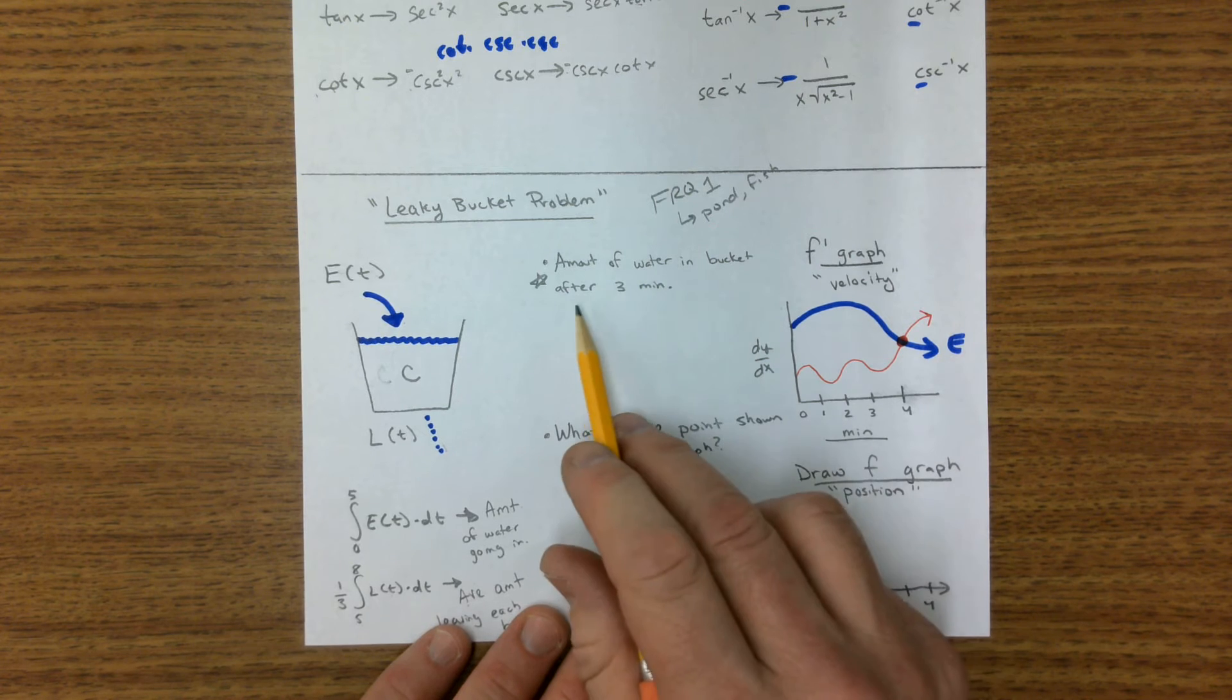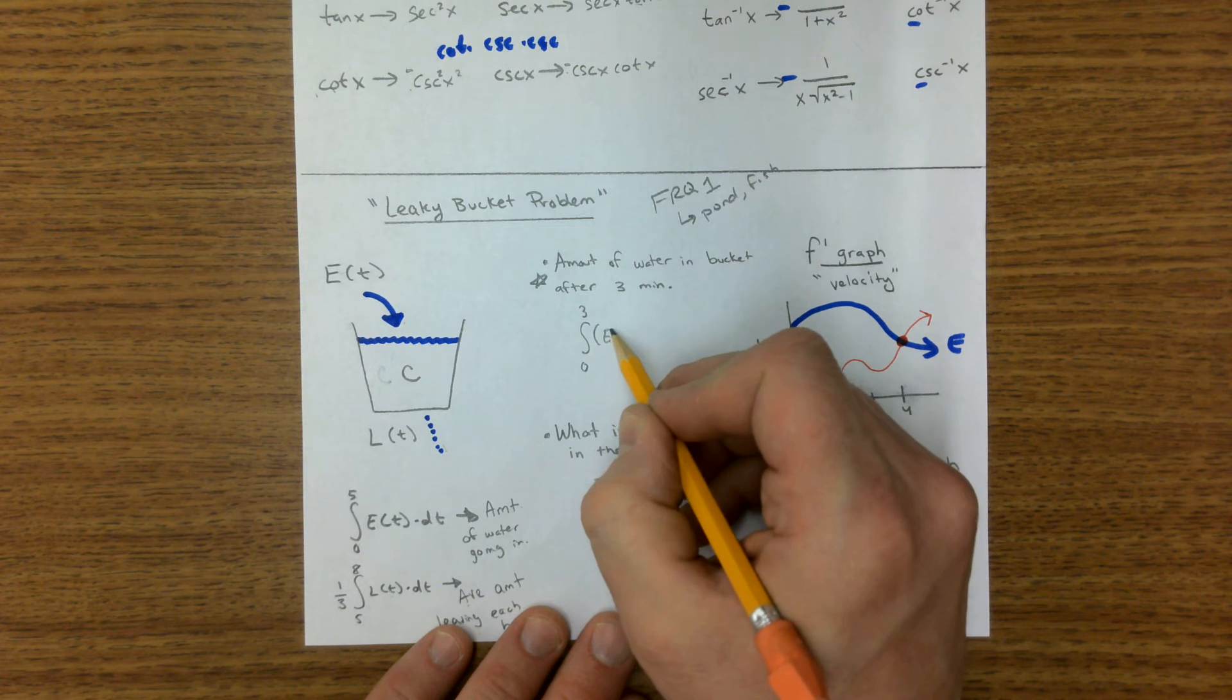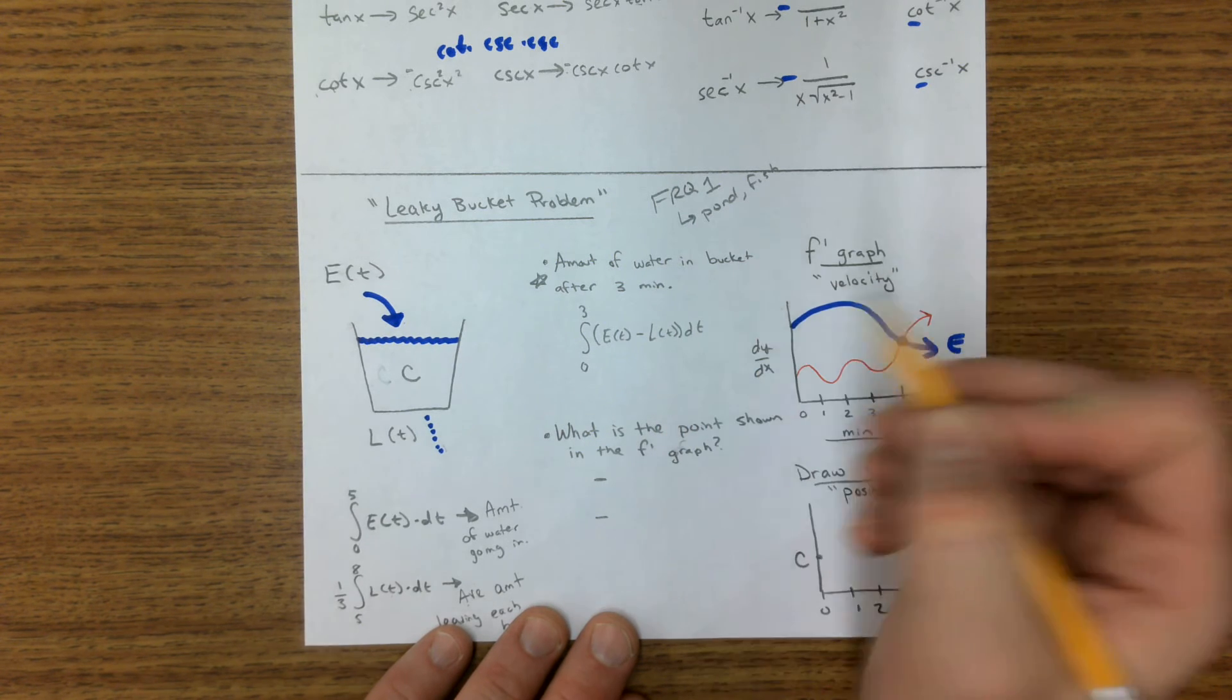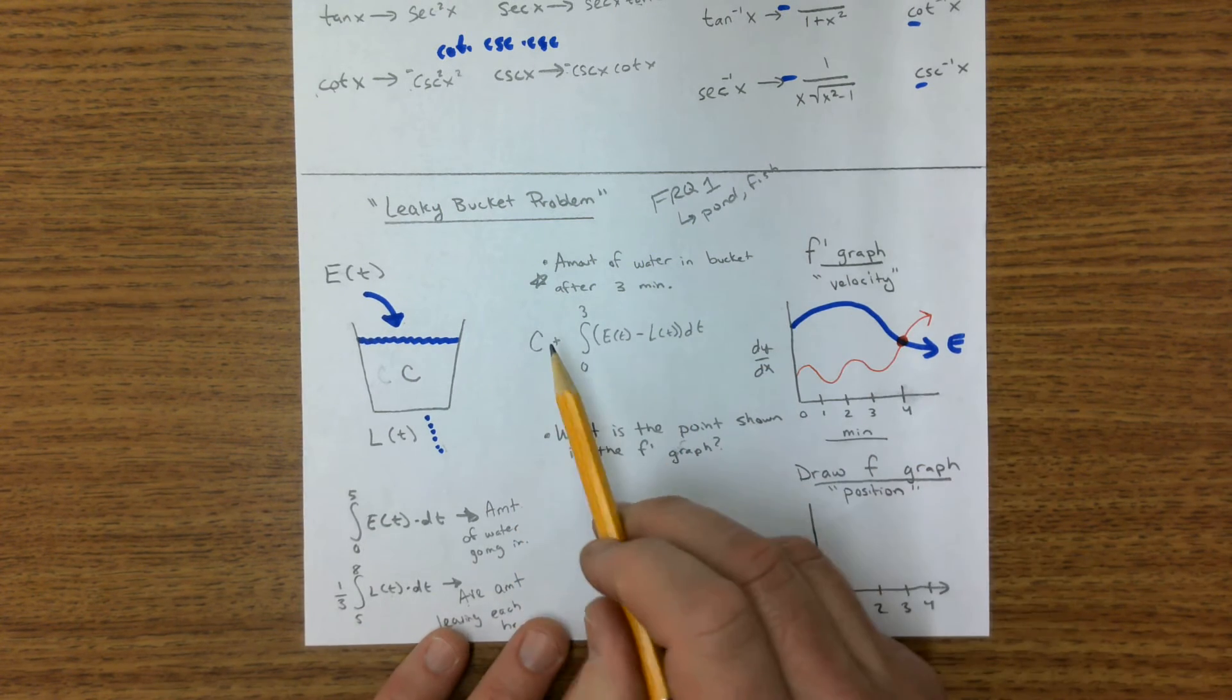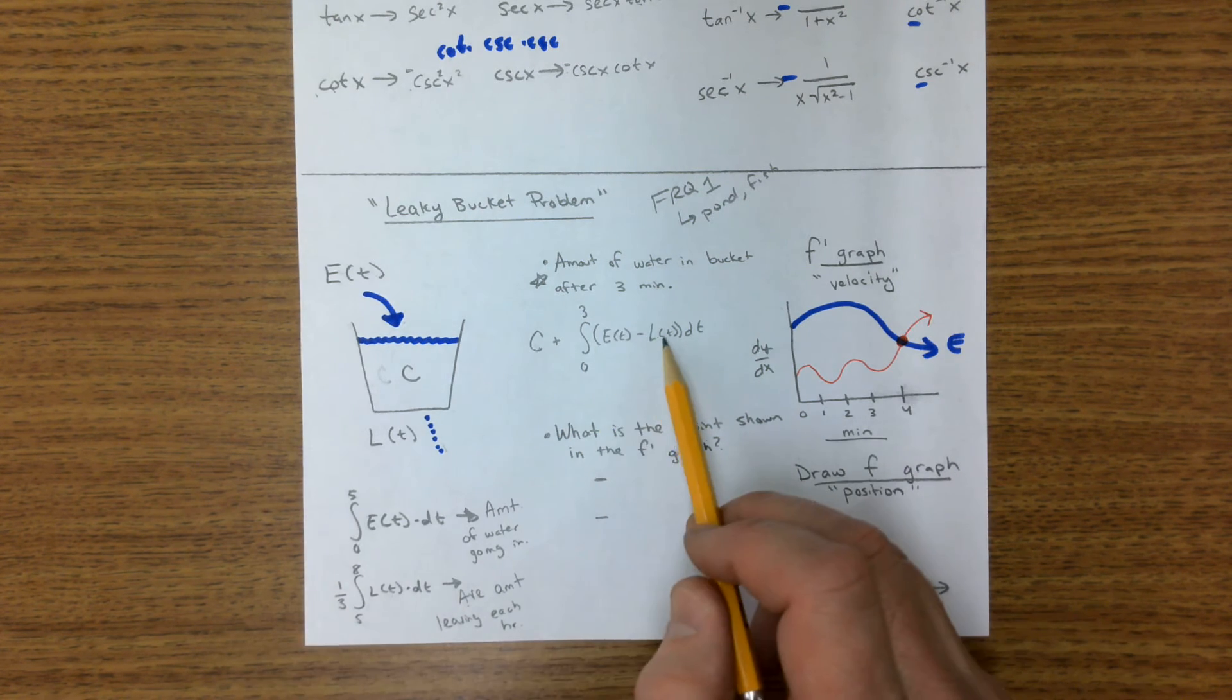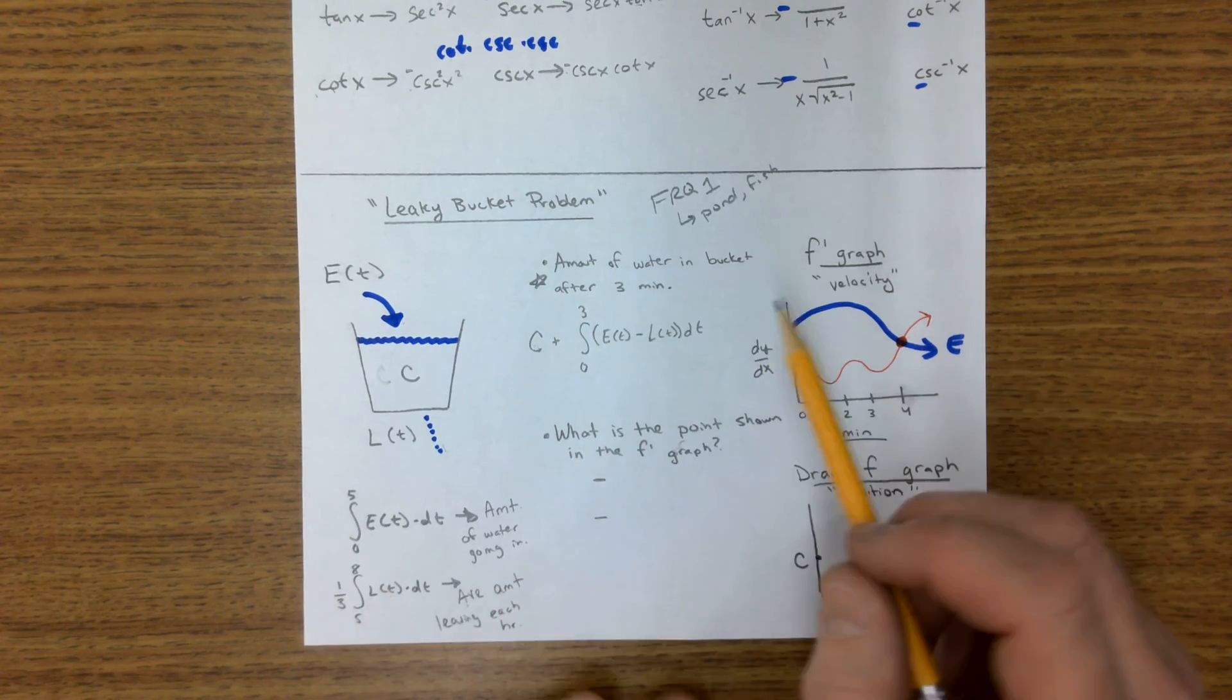But here's a really important question here. What is the amount of the water in the bucket after three minutes? Well, a lot of people do this the first time they try this: zero to three of the entering function, which makes sense, minus the leaking function, which makes sense. But then they forget that it had a starting amount. It had that constant. So it's a constant value plus this change right here. So make sure you always add on a constant. If you're integrating a rate and there's already some water there, you have to add that.